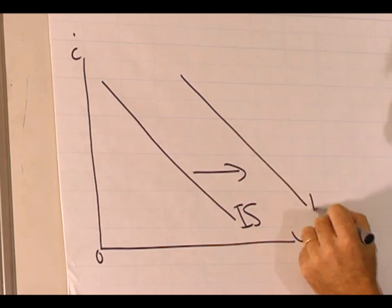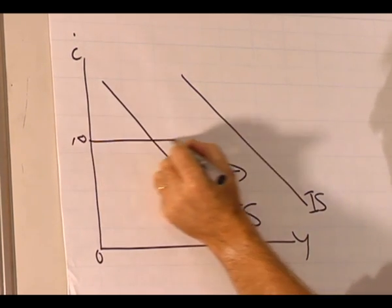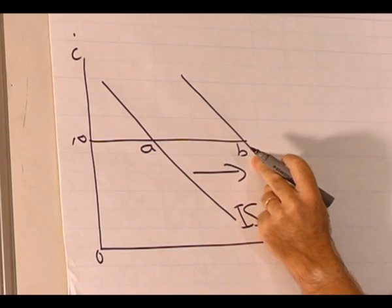Therefore the IS curve will shift to the right and at the given interest rate, say 10%, we move from this equilibrium point, point A, to this equilibrium point, point B.